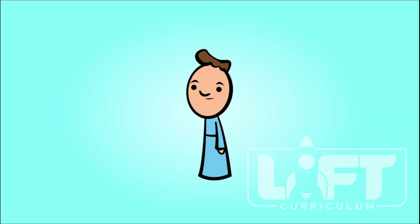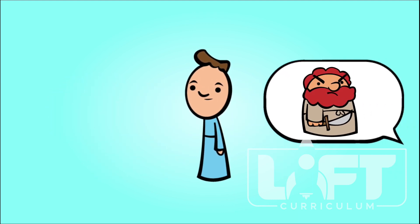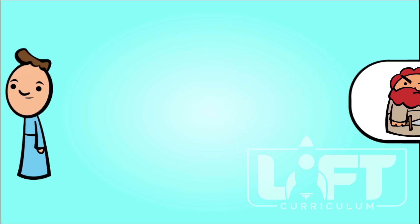One day, after his father died, Jacob found out that his brother was planning to kill him. So, he ran away into the wilderness.